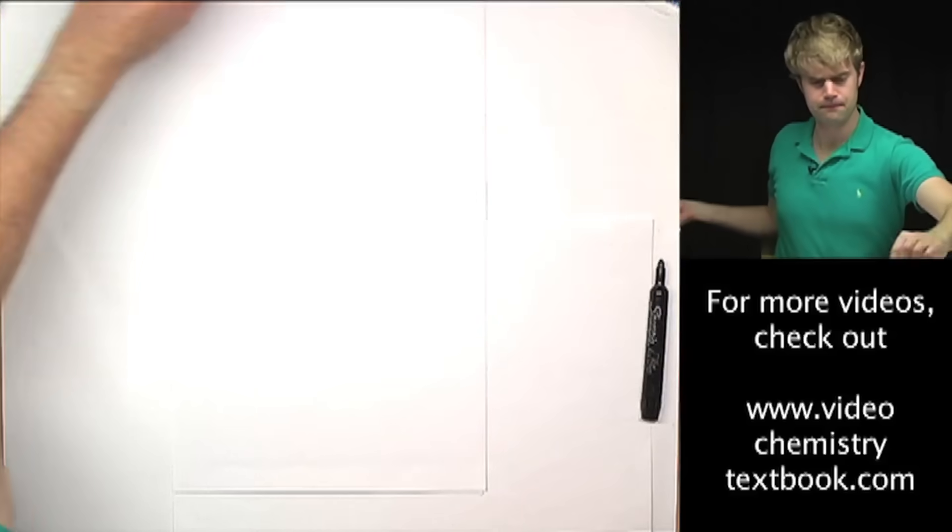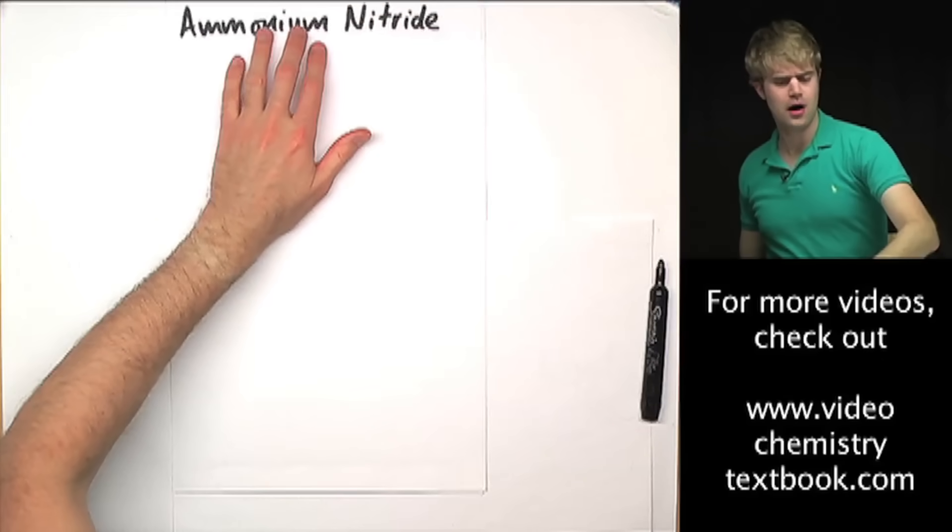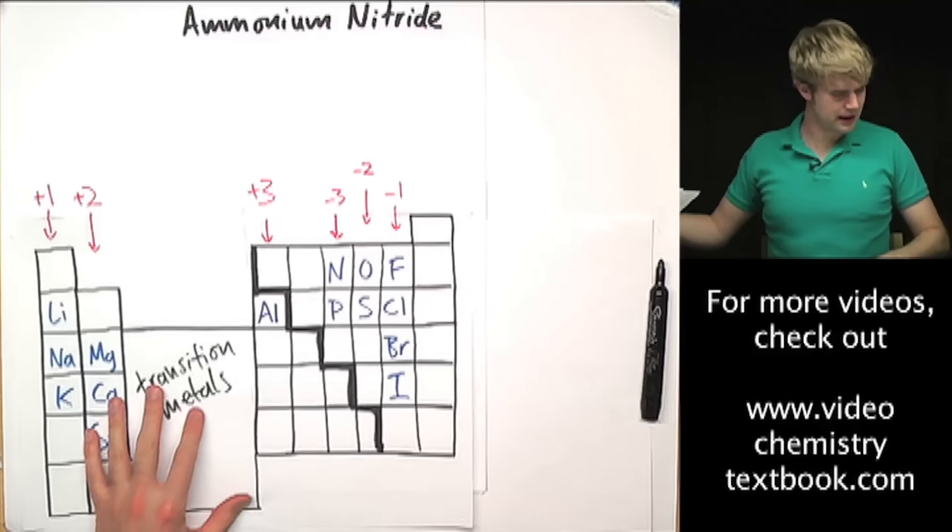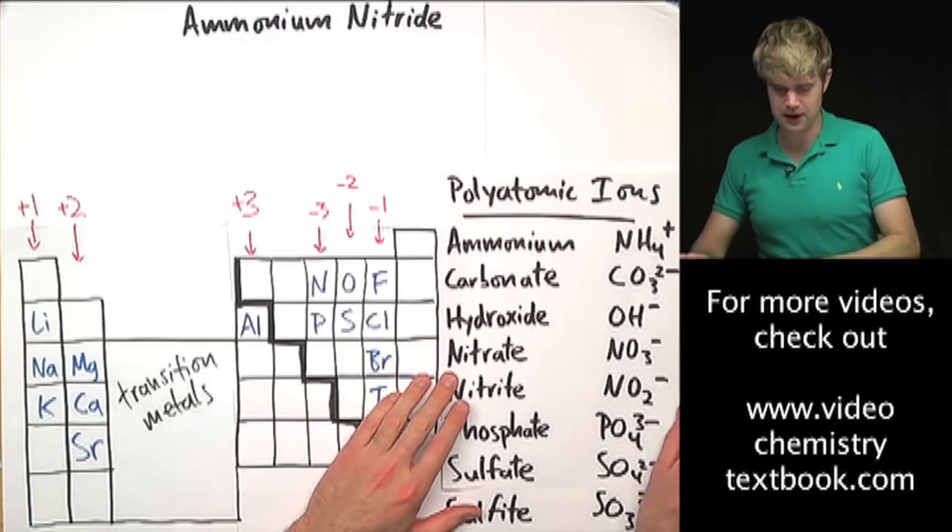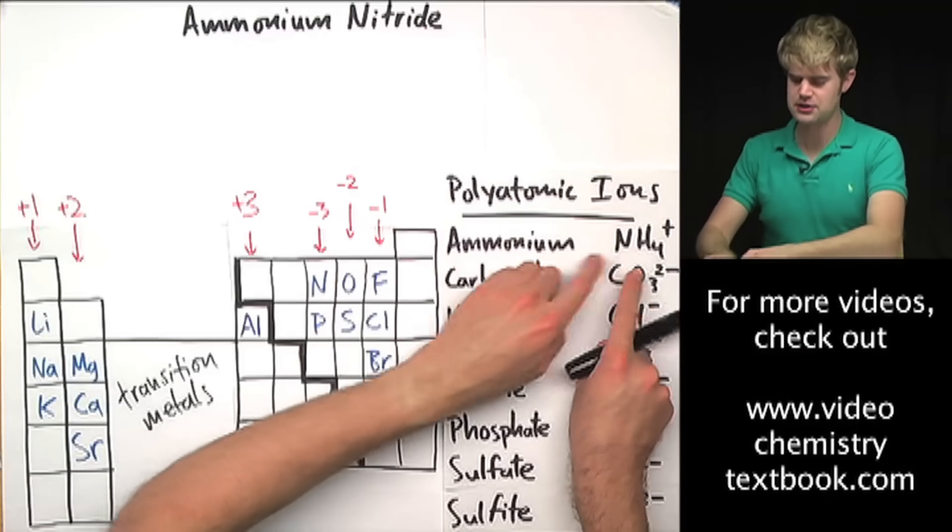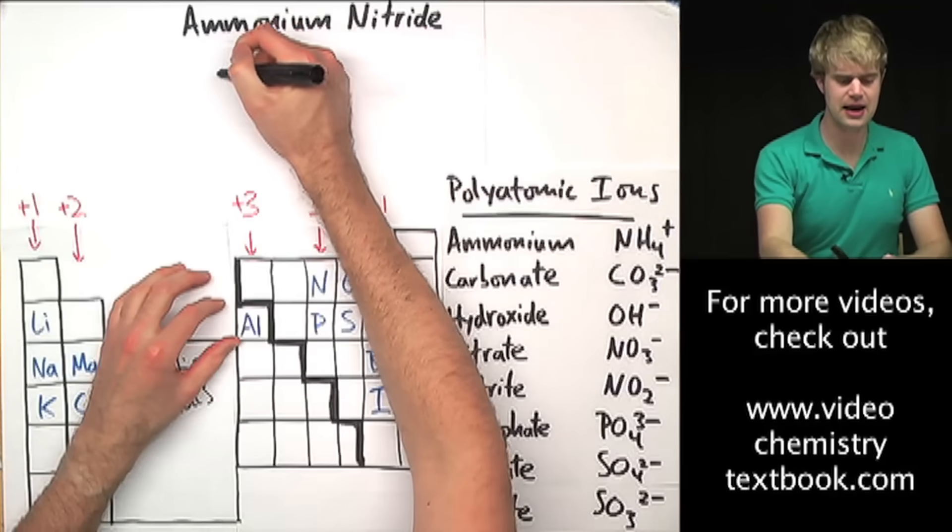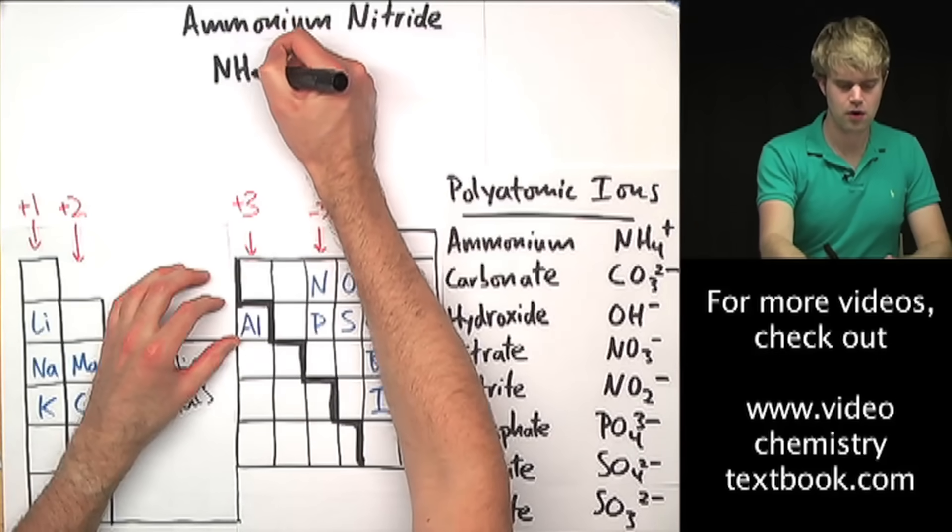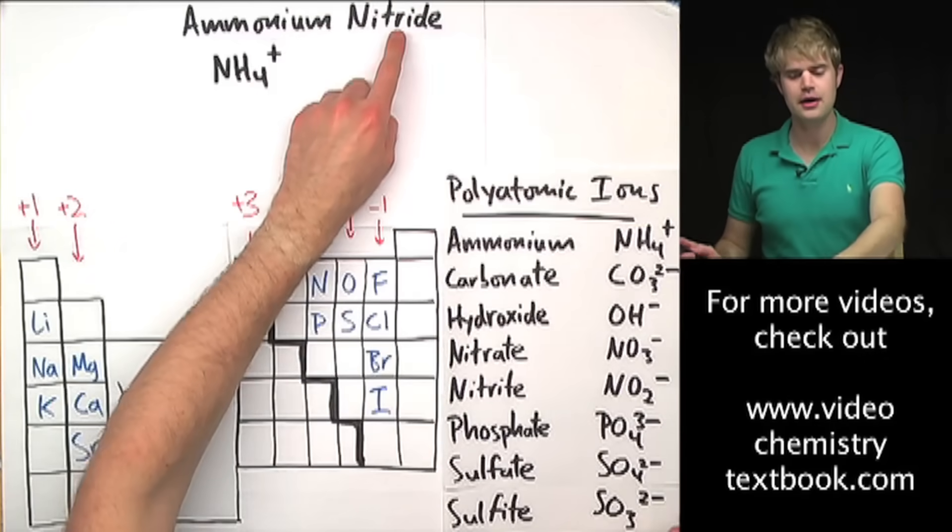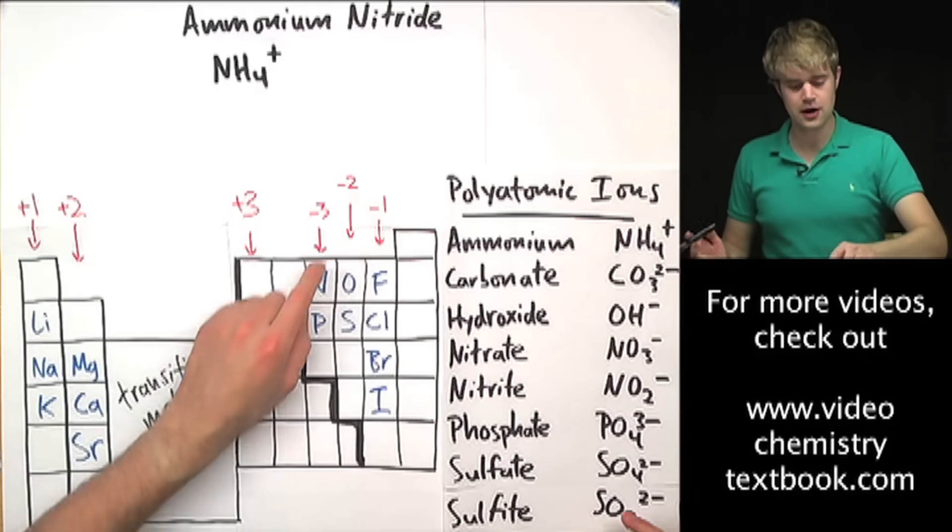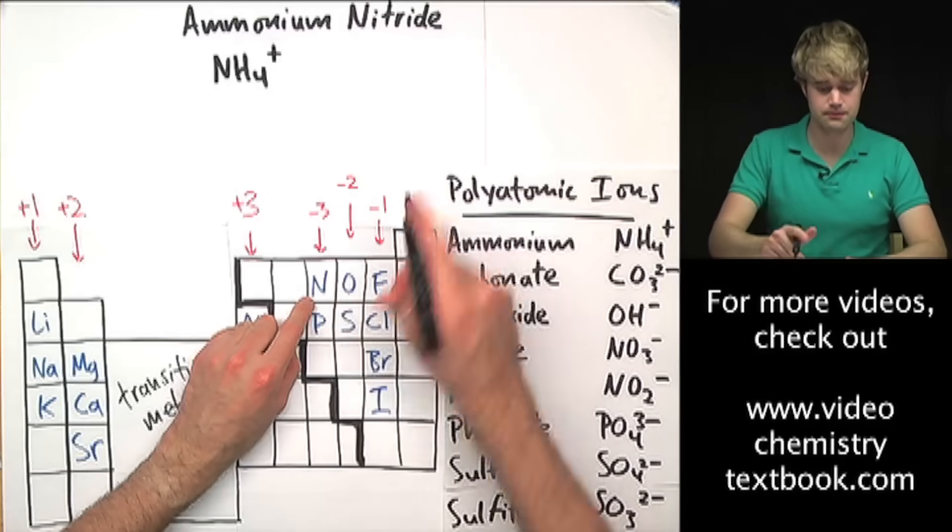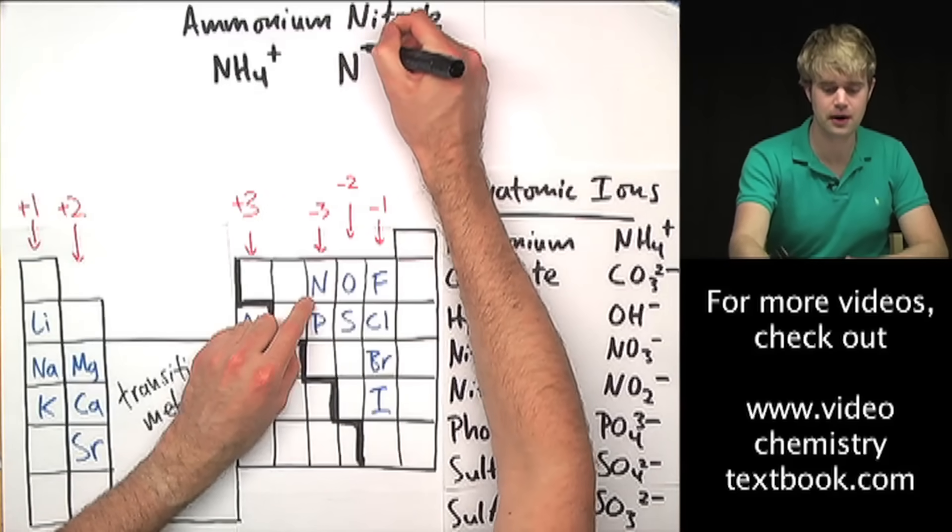Let's do a couple more. Ammonium nitride. We need our two tools: the periodic table and the list of polyatomic ions. Ammonium you may recognize from this list. It's a polyatomic ion, NH4 1+, a whole clump of atoms with a 1+ charge. Now nitride is right here on the periodic table. It's what we call nitrogen when it has a charge. It has a charge of 3-.